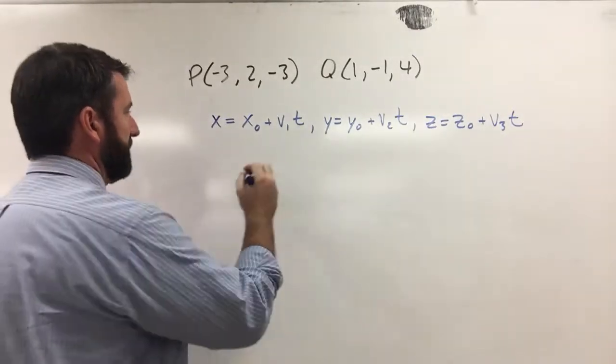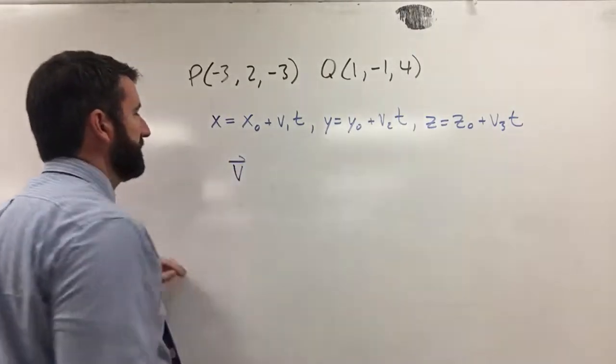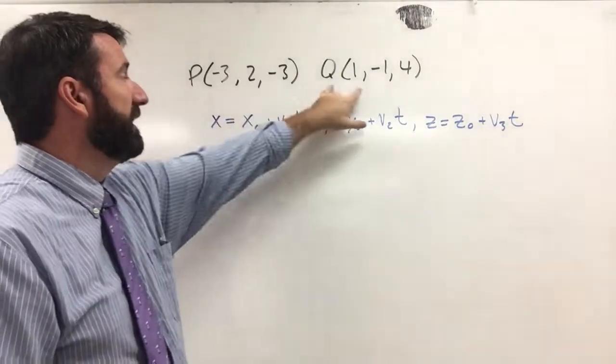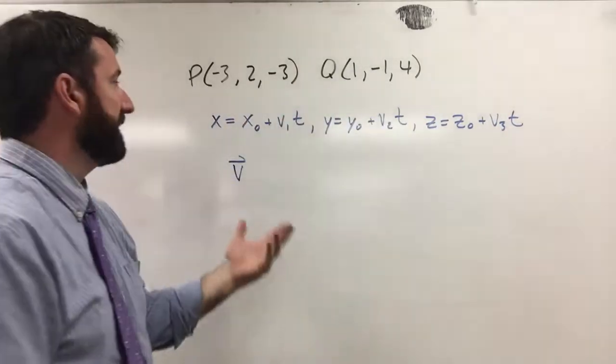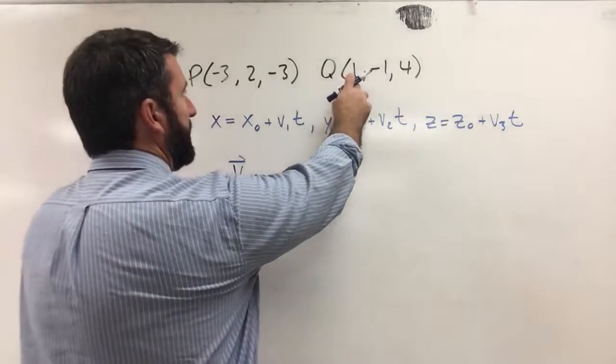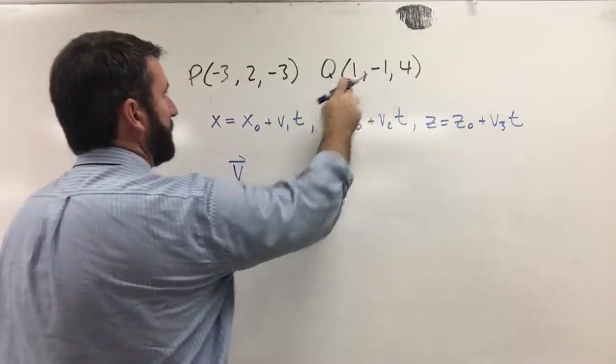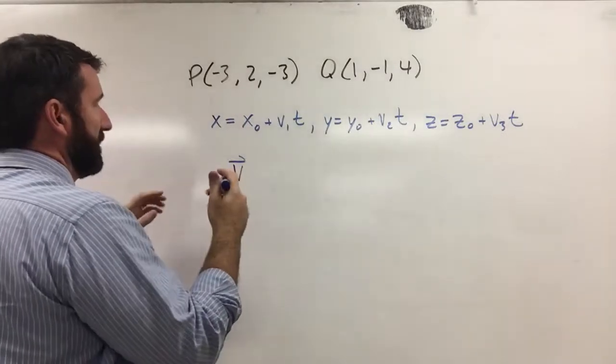So let's start off by finding a vector, call it vector v, that is parallel to the line that includes both those points. And to find the components, we're just going to take this x-coordinate for Q minus the x-coordinate of P.